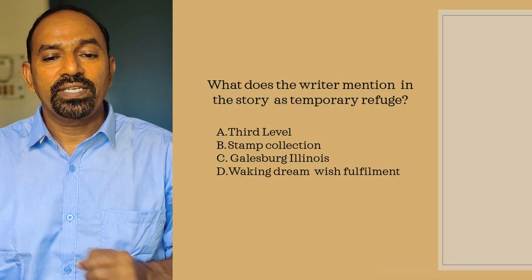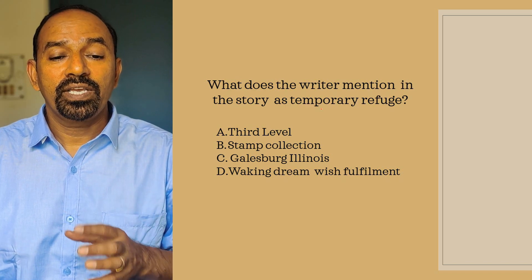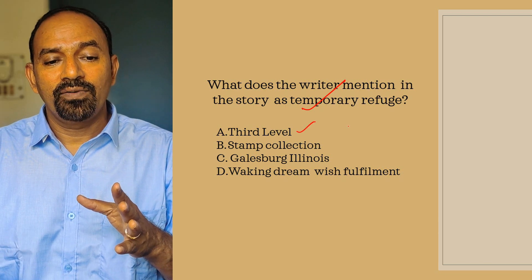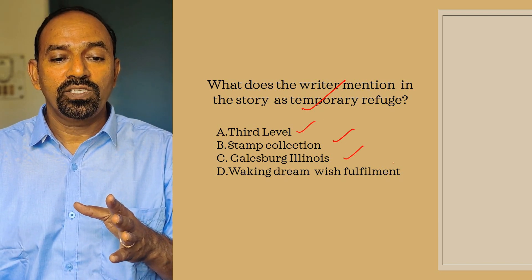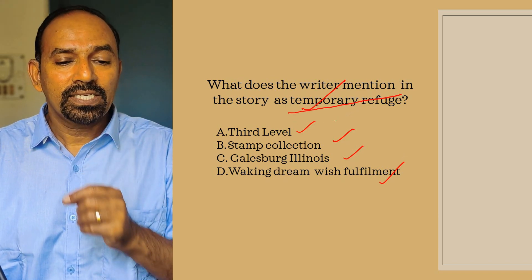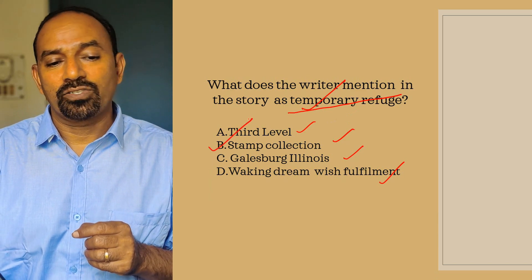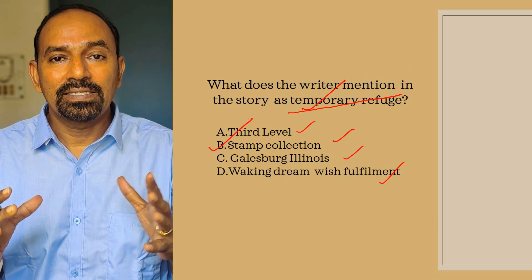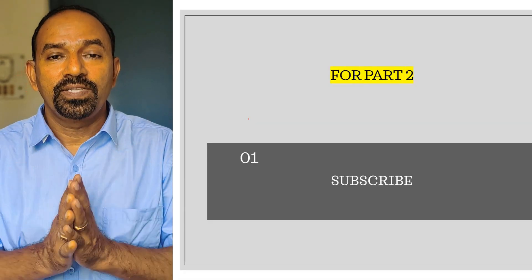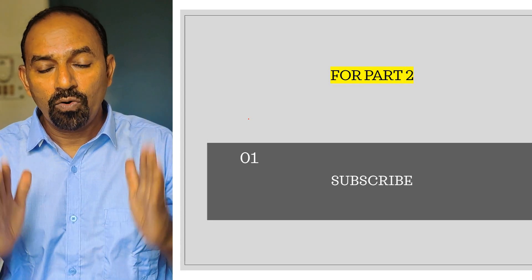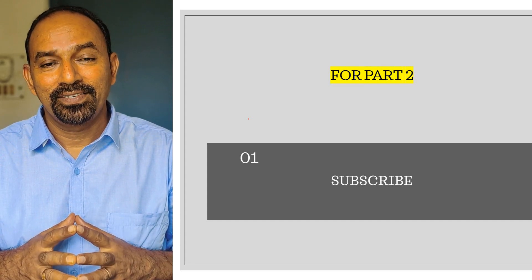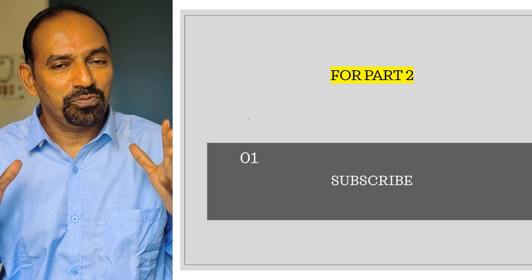Next question: What does the writer mention in the story as a temporary refuge? Options: third level; stamp collection; Galesburg Illinois; waking dream wish fulfillment. The narrator refers to stamp collection as a temporary refuge from the realities of life. This is the first part of the lesson 'The Third Level.' For more CBSE-oriented materials, subscribe to the channel and press the bell icon. Don't forget to share this video with your friends. Thank you for watching till the end.